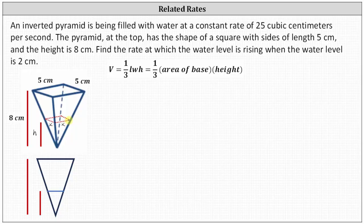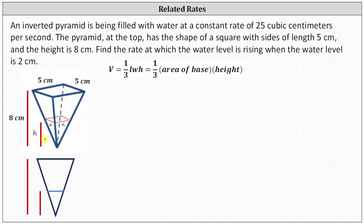The volume formula for a pyramid is volume equals one third times length times width times height, where length times width is the area of the base. Because we're dealing with the volume of the water, length times width is x times x and the height is h, so the volume of the water v equals one third times x squared times the height h.